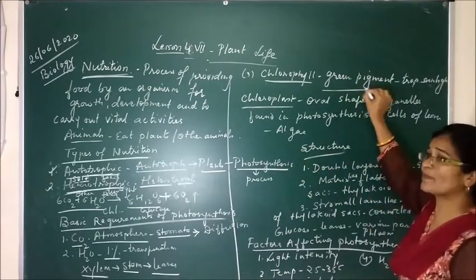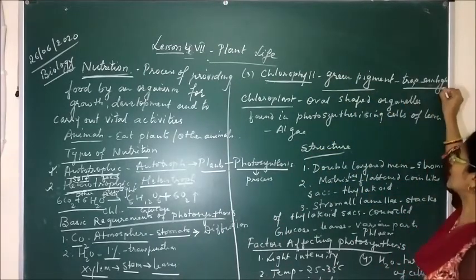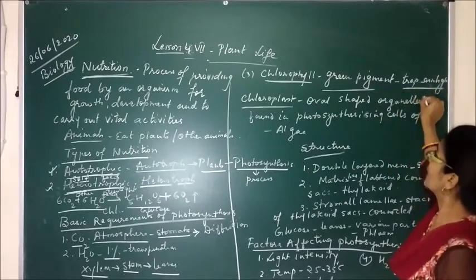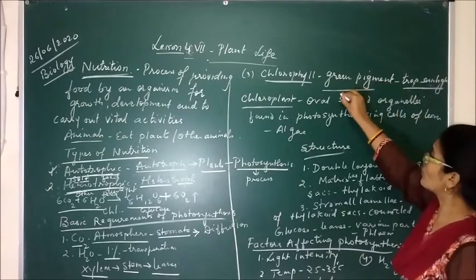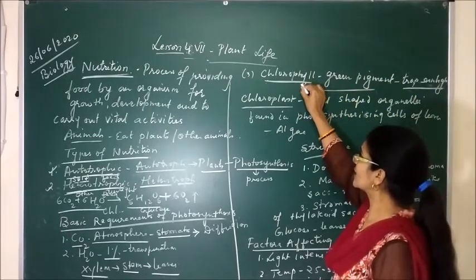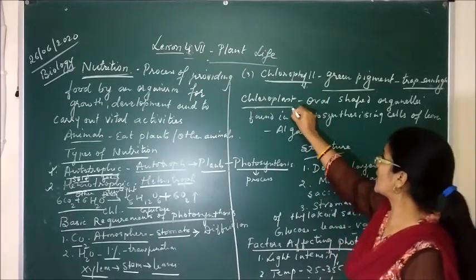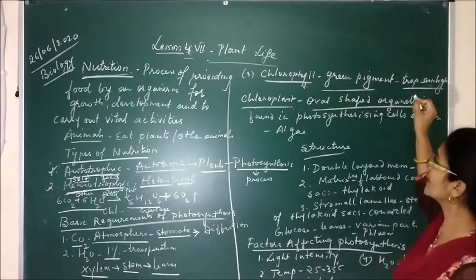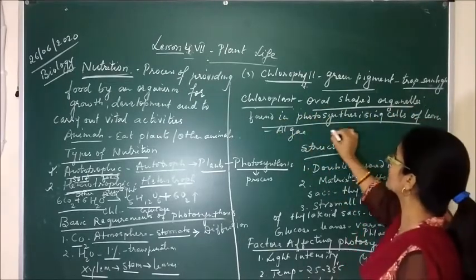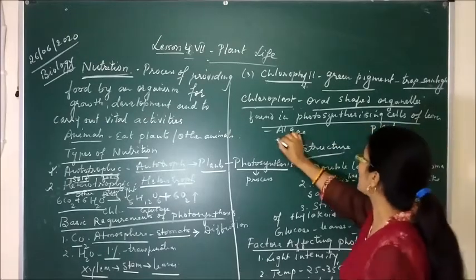The third basic requirement is chlorophyll. Chlorophyll is the green pigment present in the plant. The leaves of green plants trap sunlight using this chlorophyll. Chlorophyll is actually the green pigment present in the chloroplast. Chloroplast is an oval-shaped organelle found in the photosynthesizing cells of plants, as well as in some algae.